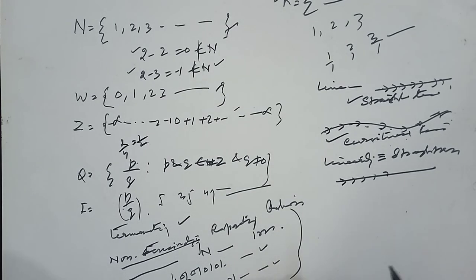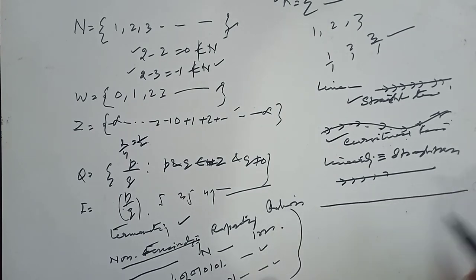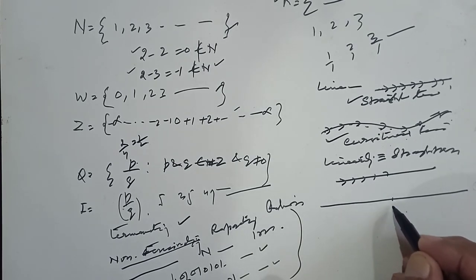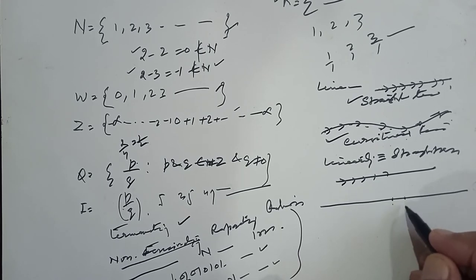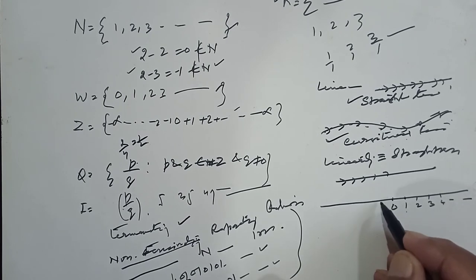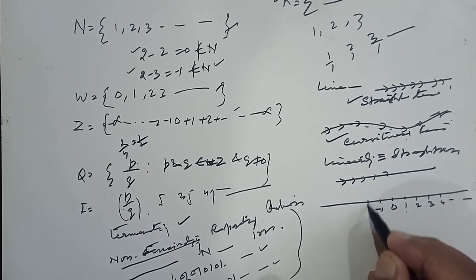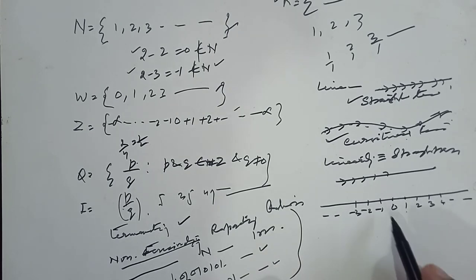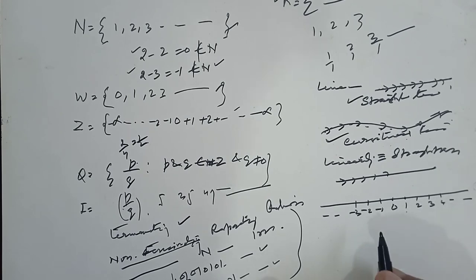Next, we have a line — this is called a number line. Why is this called a linear line? Because on it we mark 0, 1, 2, 3, 4, and so on in one direction, and minus 1, minus 2, minus 3 in the other direction, as in a graph. When we divide this whole line into regular intervals like this, these numbers are called integers.